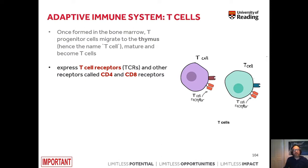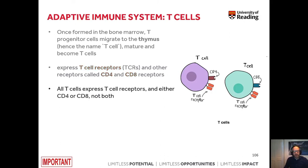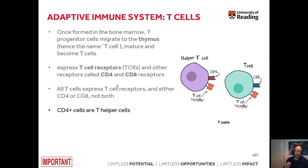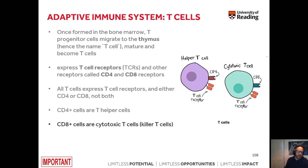T cells express so-called T cell receptors and also other receptors called CD4 and CD8 — CD stands for cluster of differentiation. All T cells express T cell receptors and either CD4 or CD8, but never both. T cells that express T cell receptor and CD4 are T helper cells. In contrast, T cells expressing T cell receptor and CD8 are cytotoxic T cells, also referred to as killer T cells.